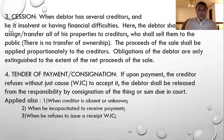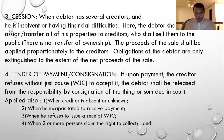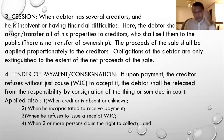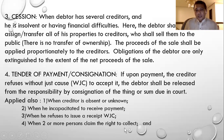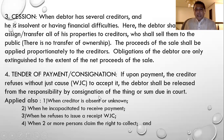Number three: when the creditor refuses to issue a receipt without just cause. Number four: when two or more persons claim the right to collect. For example, if the creditor died, and two of his sons are now claiming the same right to collect, the debtor is confused as to whom he should pay — son number one or son number two. Instead of paying them, the debtor can make a consignation of the thing in court.